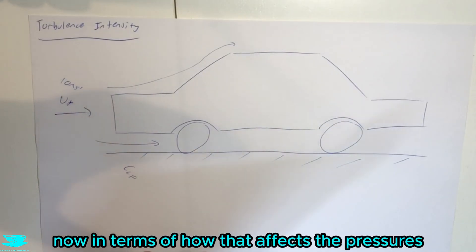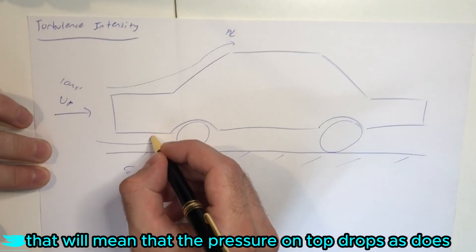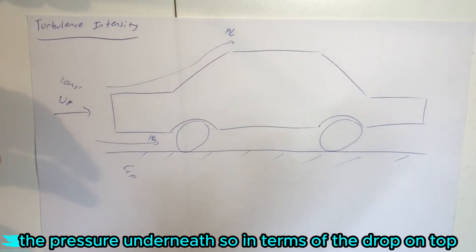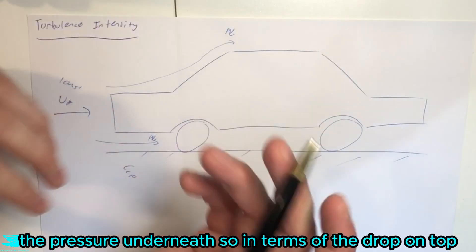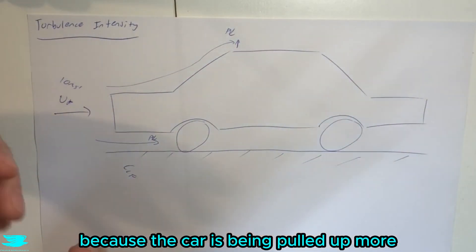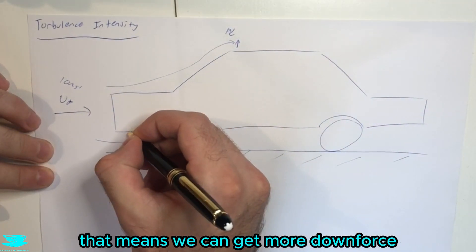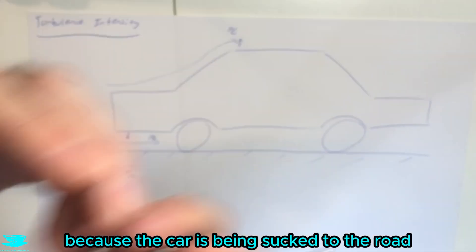Now, in terms of how that affects the pressures, usually that will mean that the pressure on top drops, as does the pressure underneath. So in terms of the drop on top, that means that we have more lift being produced because the car is being pulled up more. But because we have lower pressure underneath as well, that means we can get more downforce because the car is being sucked to the road.